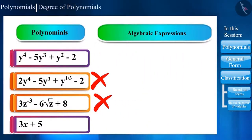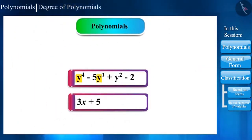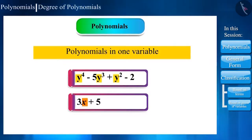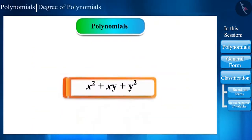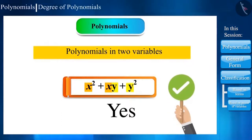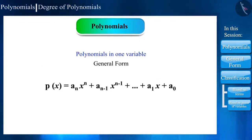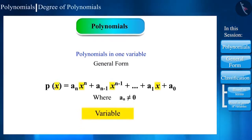In the given examples, polynomials are in one variable only, and such type of polynomials are called polynomials in one variable. A polynomial can also be in the form of two or more variables, but we will learn those polynomials in higher classes.